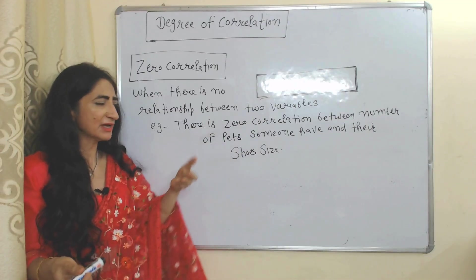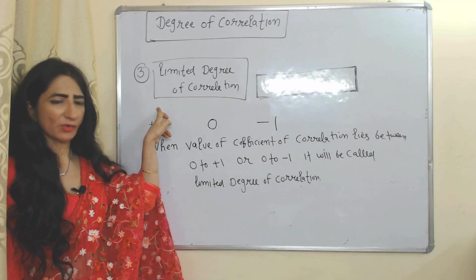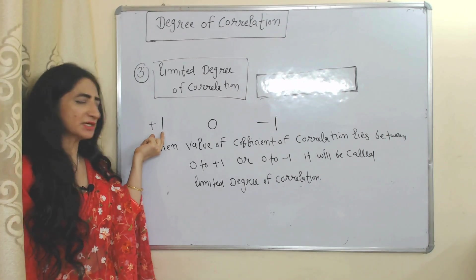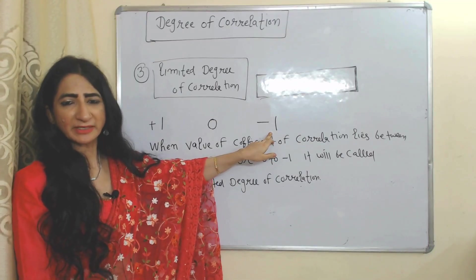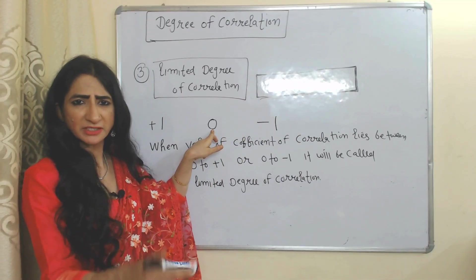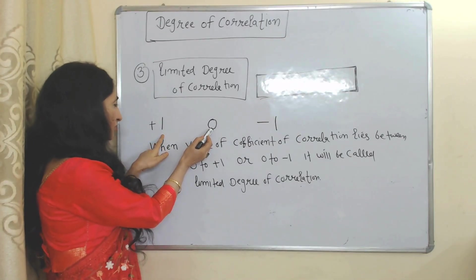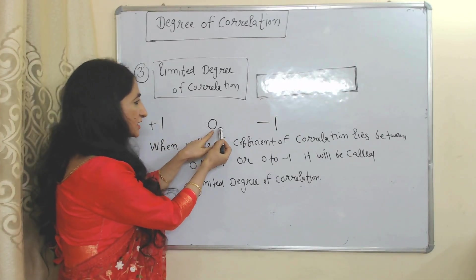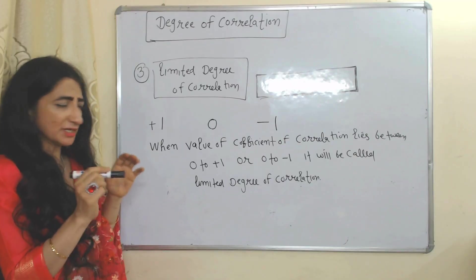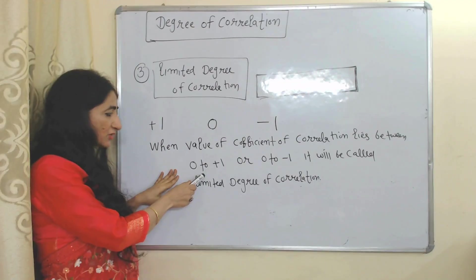For example, there is zero correlation between the number of pets someone has and their shoe size. Next is limited degree of correlation. In perfect positive correlation the value is +1, in perfect negative it is -1, and in zero correlation it is 0. But what about values that lie between zero and +1 or zero and -1?